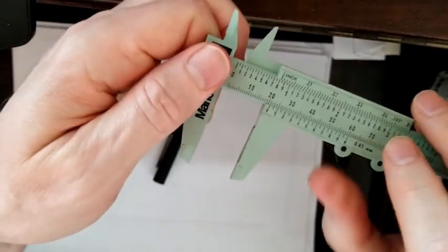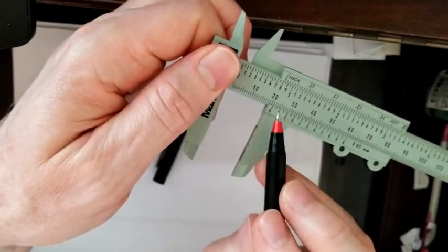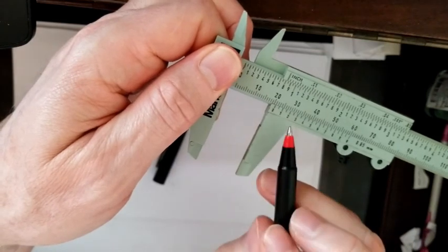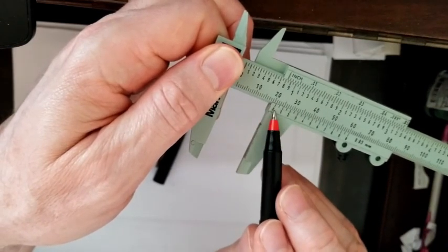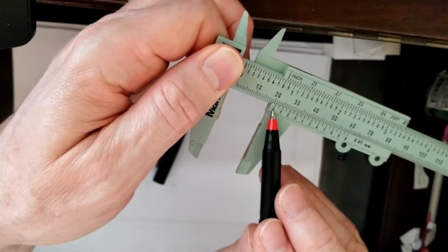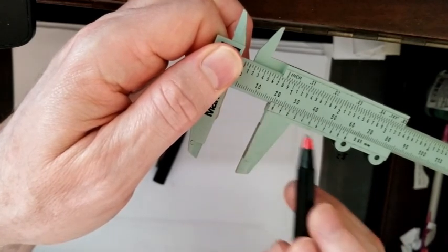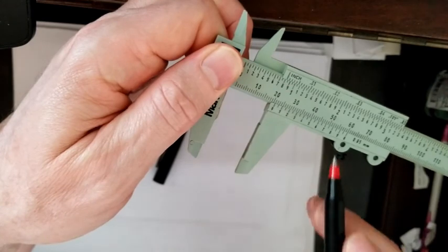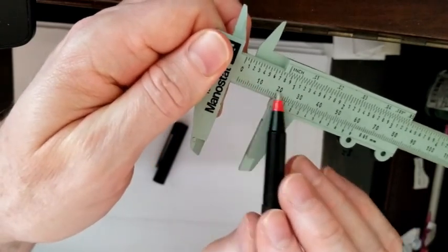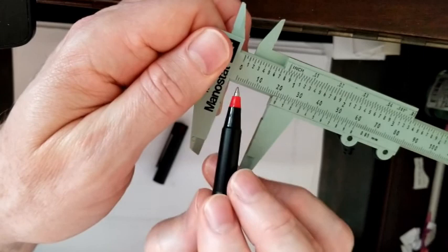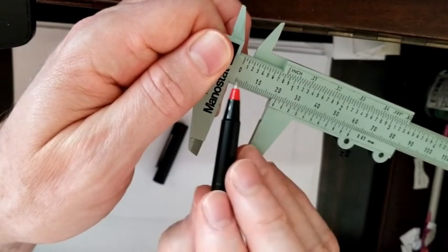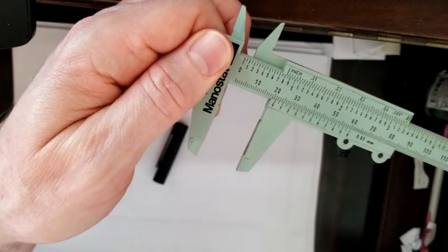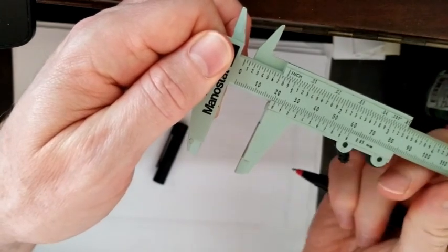As you look at this, we have two sets of numbers since we're going to be doing metric. We have the numbers 0 through 10, depending on how you want to look at it, and then we have another set of numbers here. From this point to that point is 10 millimeters. From that point to that point is 80 millimeters, or 8 centimeters.